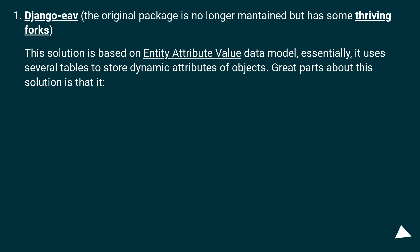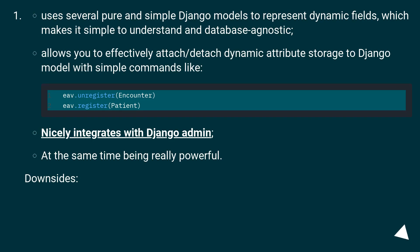Django EAV — the original package is no longer maintained but has some thriving forks. This solution is based on the entity-attribute-value data model. Essentially, it uses several tables to store dynamic attributes of objects. The great parts about this solution are that it uses several pure and simple Django models to represent dynamic fields, which makes it simple to understand and database agnostic. It allows you to effectively attach or detach dynamic attribute storage to a Django model with simple commands, and nicely integrates with the Django admin while being really powerful.